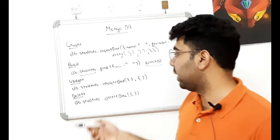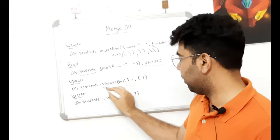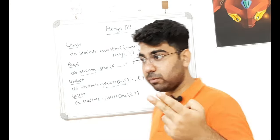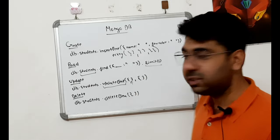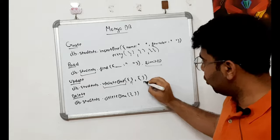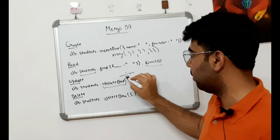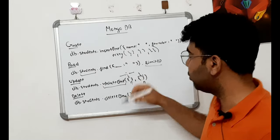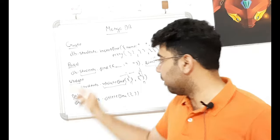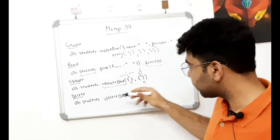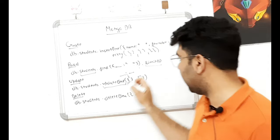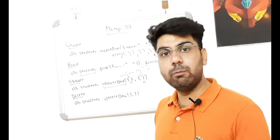Now let's talk about update. We use db.students.updateOne(). Here we pass two objects. The first object is the filter — the record we want to find and change. The second object is the update — what we want to change it to. For example, to change the name to 'Akshar', we pass the filter in key-value format, and the new value in the second object using the $set operator.